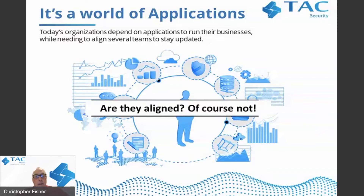This is why application security has become one of the top sources of risk. Forrester said the number one source of external attacks, according to survey participants, was web applications — which everybody uses. So we know this is a problem. The question as a security practitioner and security leader is: where do I start? What tools do I use? How do I address this problem without fragmenting my organization?